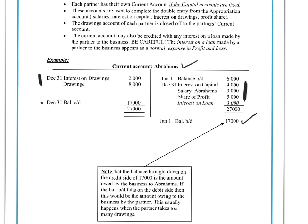So anything that adds to the amount the company owes Abrahams gets put on the credit side, and each partner will have his or her own current account. You'll have the balance from last year — Abrahams was owed $6,000 at the beginning of the year. Then he was paid $4,000 in interest on capital, got a salary of $9,000, his share of profit was $5,000, and there is also interest on a loan he made to the company, which would be shown in your profit and loss account. If you add all that together, you'd have $27,000.